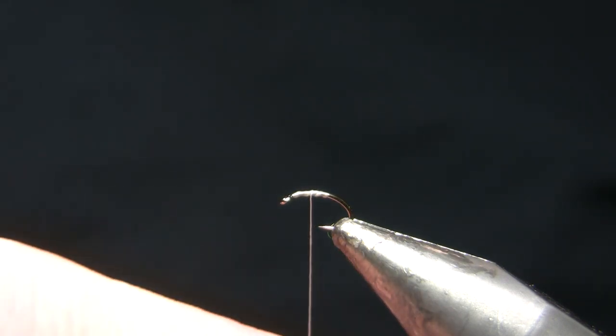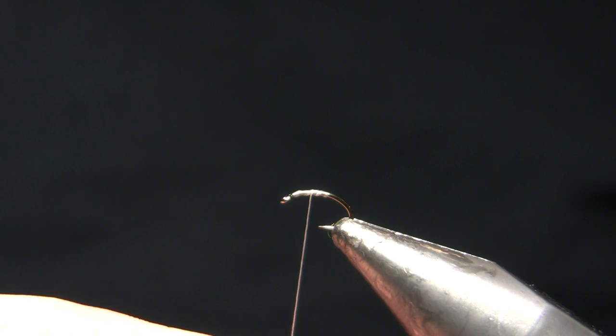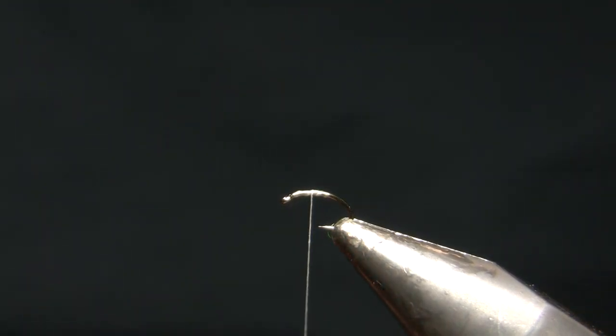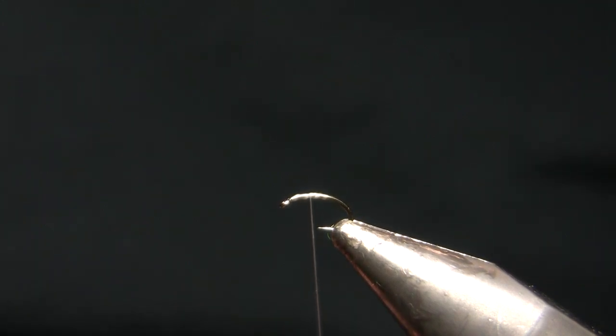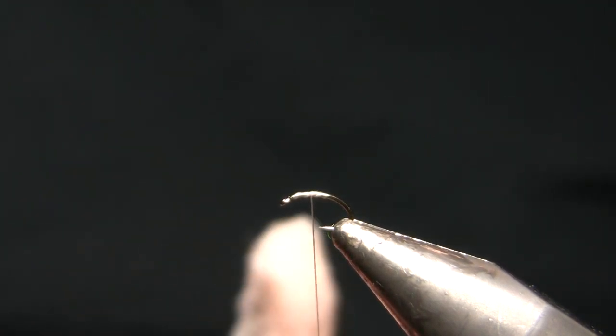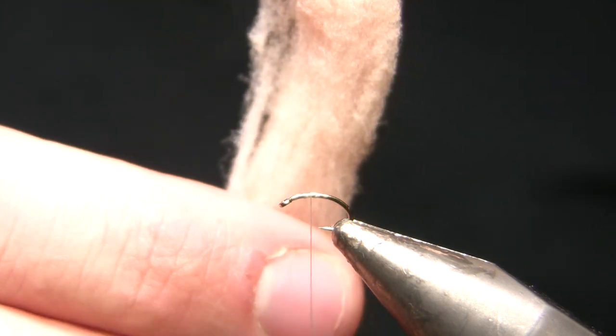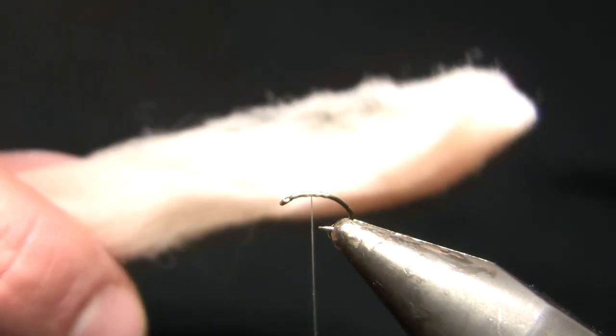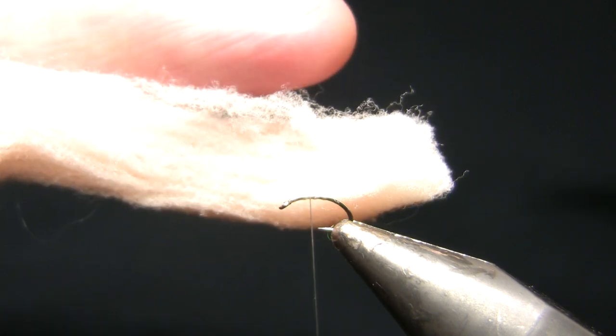You can't see the bobbin because I'm zoomed in really close on that hook, but I've just twisted my thread to cord it because that's going to help dig into the material. I'm going to tie this with a little less egg yarn than you might see on a lot of other videos—a clump about as thick as my finger for an 18.